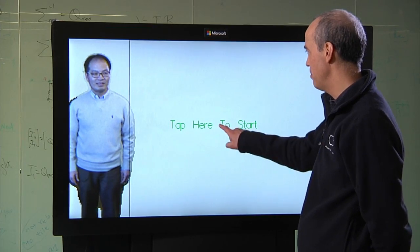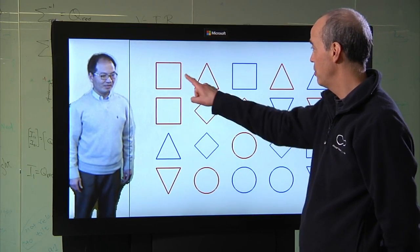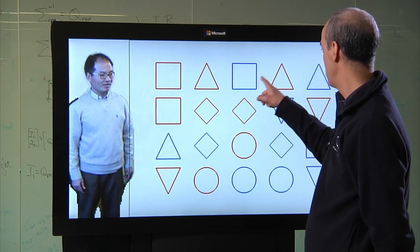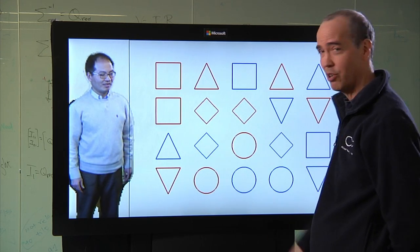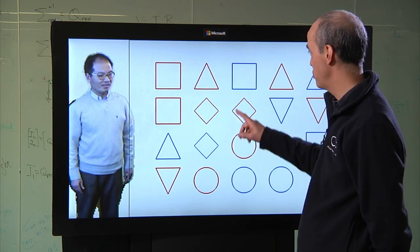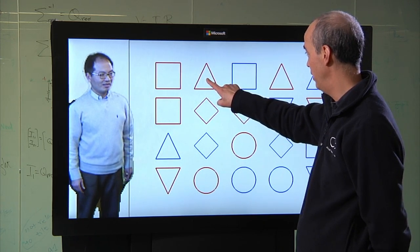So in this game, you see a set of 20 symbols. They come in pairs. Two red squares, two blue squares, and so forth. I'm going to erase one of them, and Zheng Yu has to erase the corresponding one.